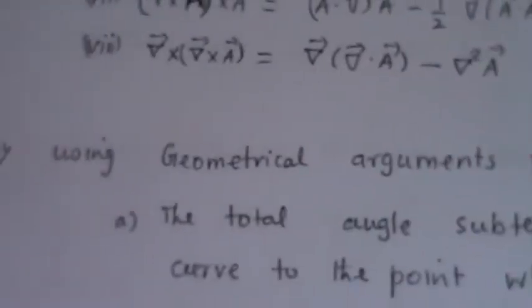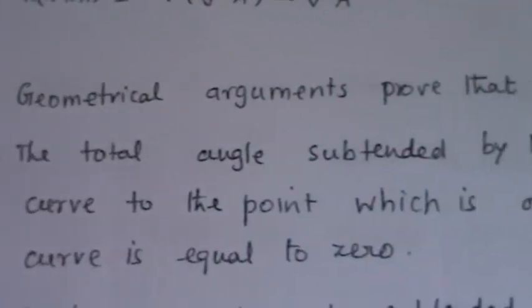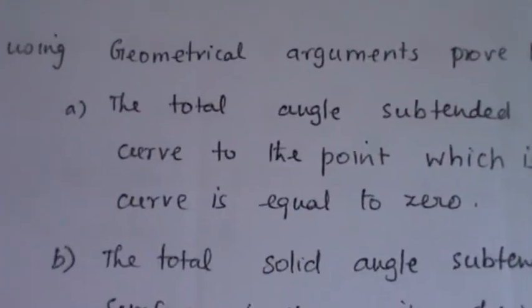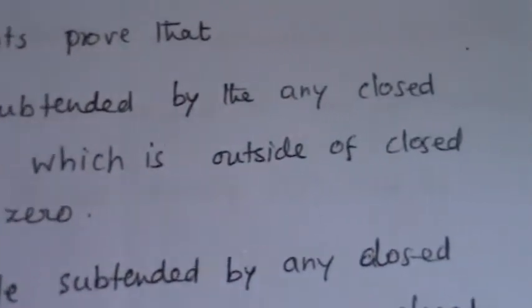In a closed curve, the total solid angle subtended by any point which is outside the closed curve is equal to zero. That's what I want.